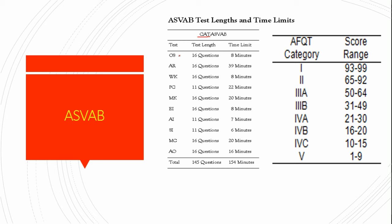It's a test comprised of 10 different subtests, which you can see to the left here, including general science, arithmetic reasoning, word knowledge, paragraph comprehension, mathematical knowledge, and so on. You'll have 154 minutes to complete 145 questions. In addition to receiving a score for each subtest, you'll also be given an AFQT score — an Armed Forces Qualification Test score — which determines whether you're qualified to join the military.